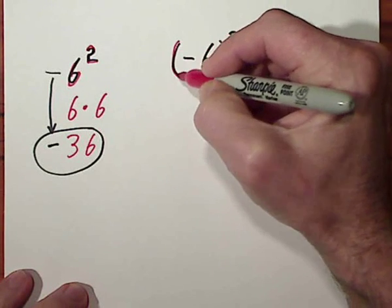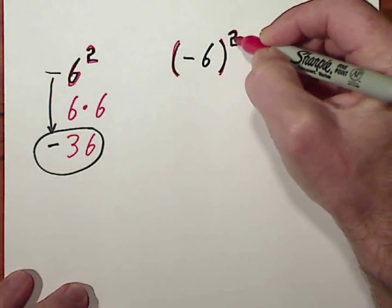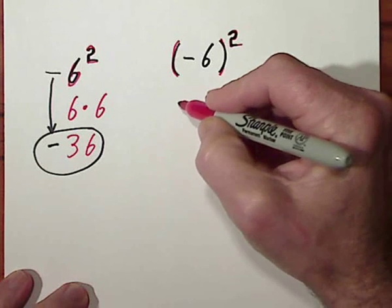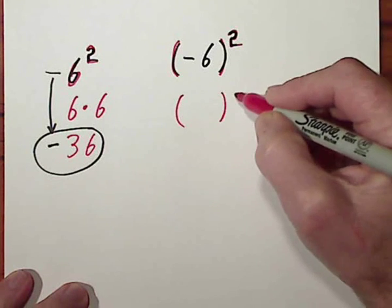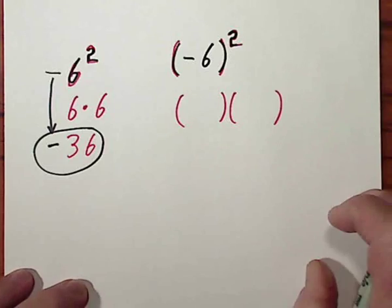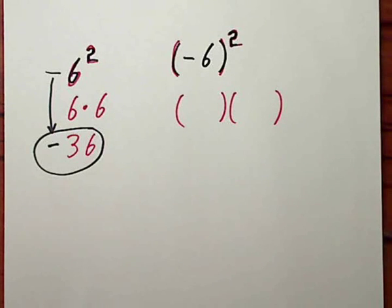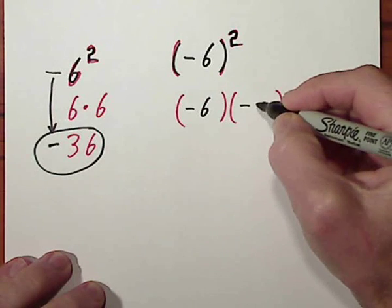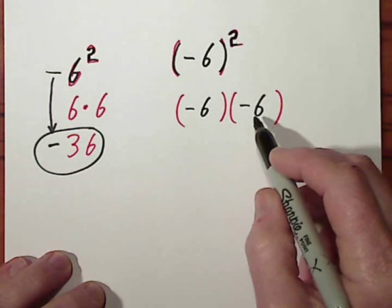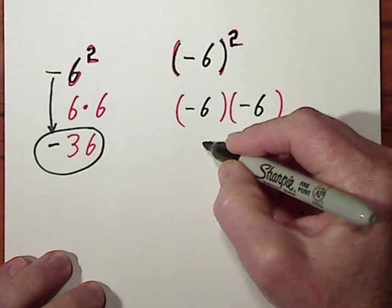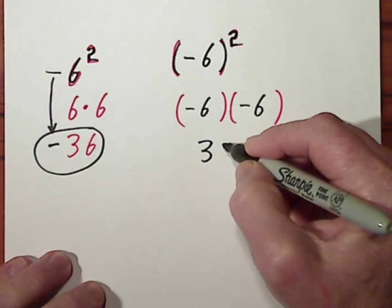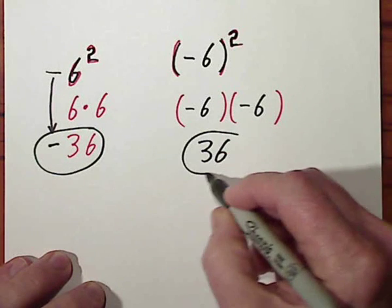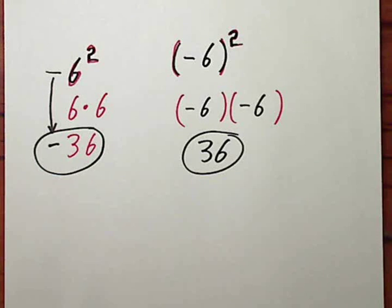That means we have two sets of parentheses, and within each set of parentheses, we happen to know there's a negative 6. And negative 6 times negative 6 yields a positive 36. So that would be the difference.